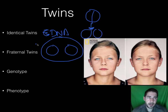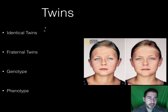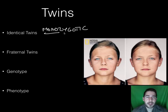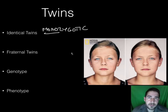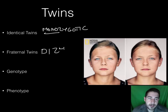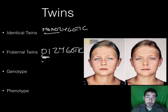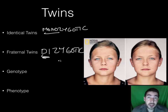Another name for identical twins is monozygotic. 'Mono' means one, and a zygote is the stage before a fetus develops, so monozygotic means it comes from one. Fraternal twins are called dizygotic — 'di' means two, like a pair of dice. You'll want to know those names as they might show up on the exam.